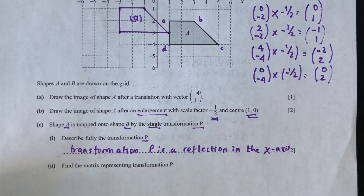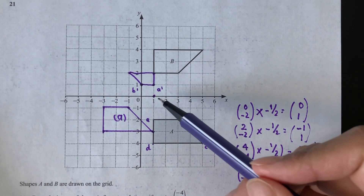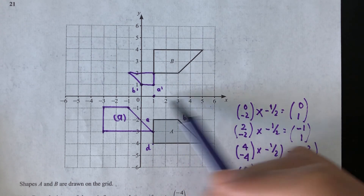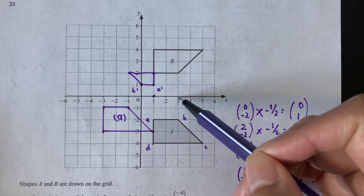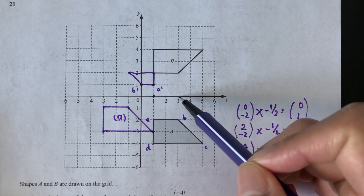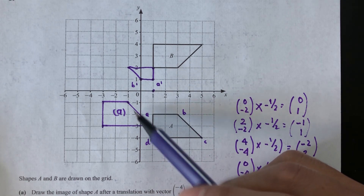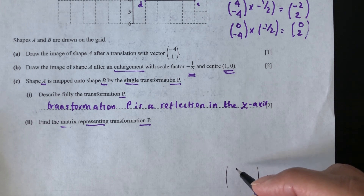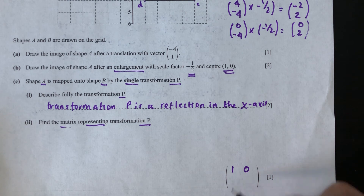Part 2 of part C: find the matrix representing transformation P. The x-coordinates remain the same (e.g., 1 stays 1, 3 stays 3), while y-coordinates change sign (e.g., -2 becomes 2). So the matrix is: top row (1, 0), bottom row (0, -1).